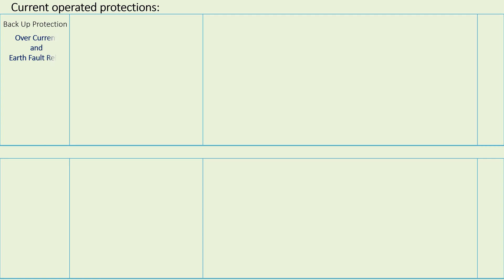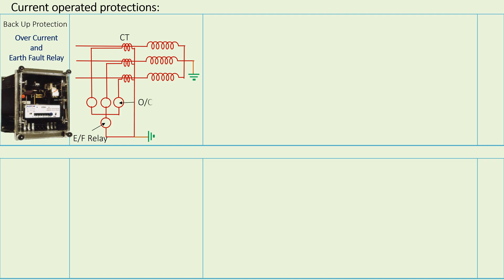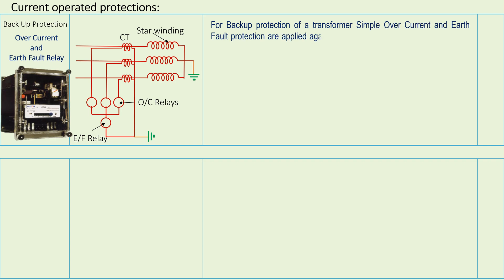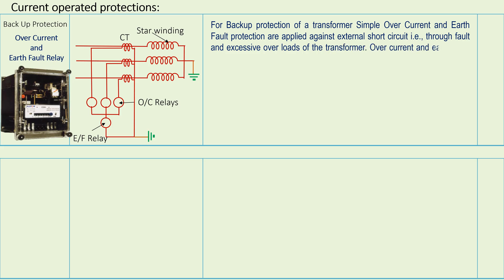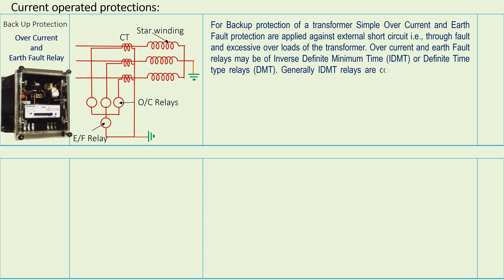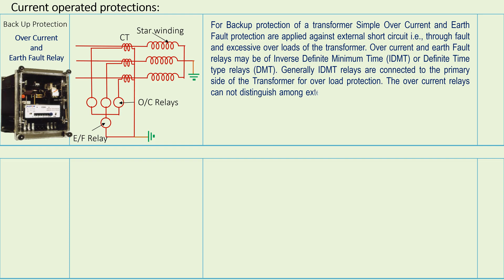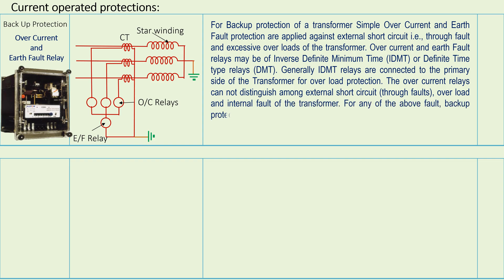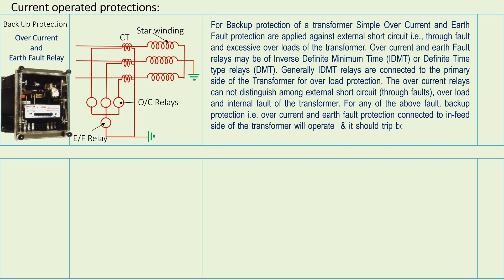Overcurrent and Earth Fault Protection: For backup protection of the transformer, simple overcurrent and earth fault protections are applied against external short circuit (through fault) and excessive overloads. Overcurrent and earth fault relays may be of Inverse Definite Minimum Time (IDMT) or Definite Minimum Time (DMT) type. Generally, IDMT relays are connected to the primary side of the transformer for overload protection. The overcurrent relays cannot distinguish among external circuit through faults, overload, and internal fault of the transformer. For any of these faults, backup protection connected to the input side of the transformer will operate and trip both the primary and secondary circuit breakers.